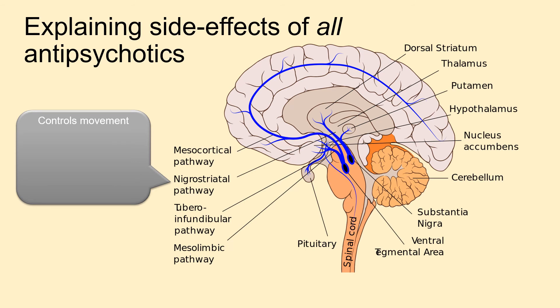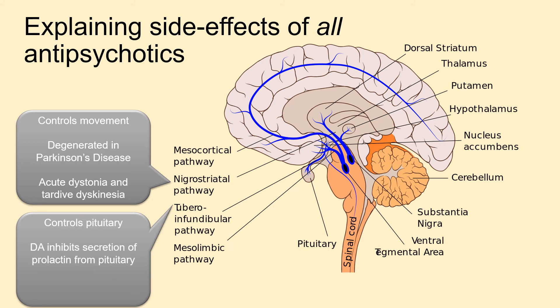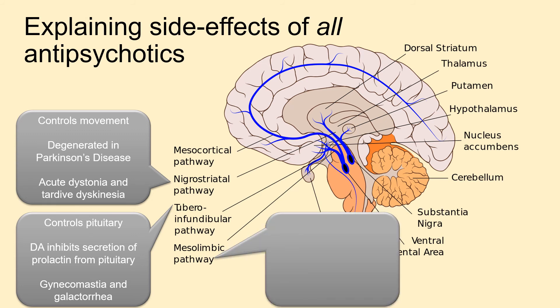Thinking about the dopamine pathways and their functions: the nigrostriatal pathway controls movement and motor program selection — the pathway that degenerates in Parkinson's disease. The tuberoinfundibular pathway controls prolactin secretion from the pituitary, which is why some antipsychotics cause gynaecomastia and galactorrhoea — men developing breast tissue and expressing milk. The mesolimbic pathway is the famous dopamine reward pathway, which may explain the anhedonia associated with schizophrenia.